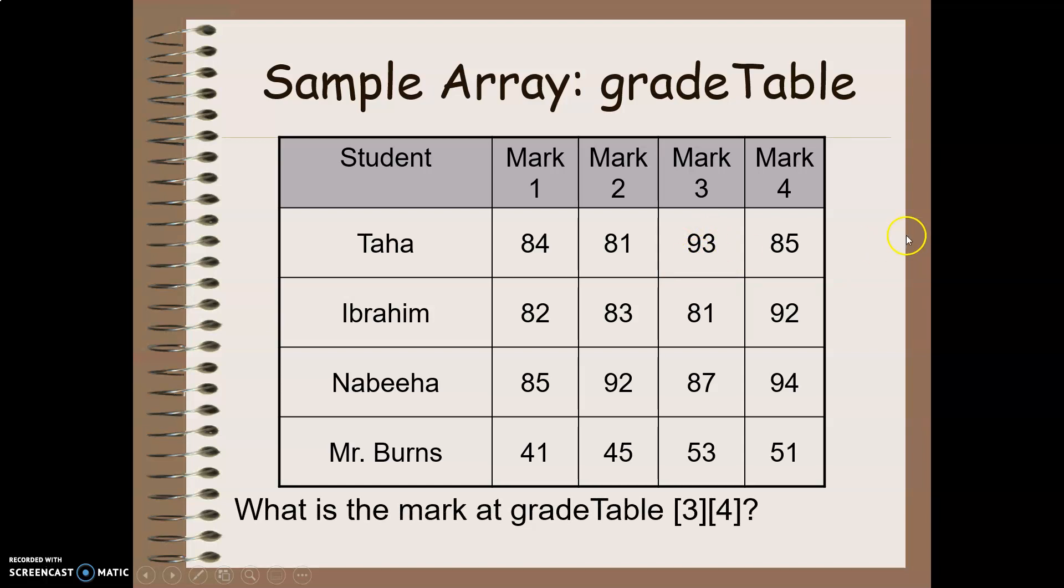Another one here. We're going to look at gradeTable[3][4]. So we're at row zero, one, two, three, column zero, one, two, three. Uh-oh, we've hit column four here. This is invalid. So again, remember from when we did one-dimensional arrays, our positions of our arrays start at position zero and go up from there. So even though I have four columns here, four values inside Mr. Burns' marks, I only have positions zero, one, two, and three. There is no position four, so I end up with an invalid location.